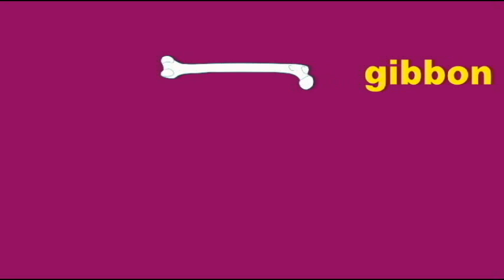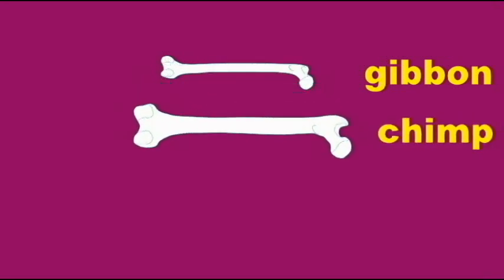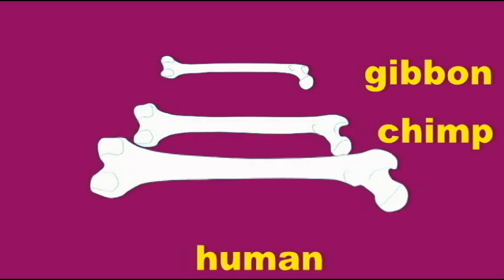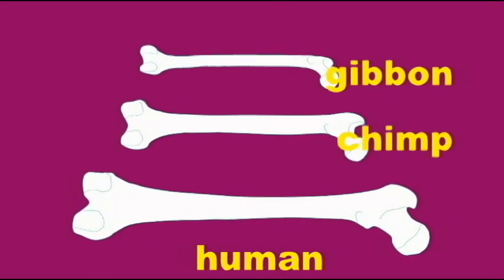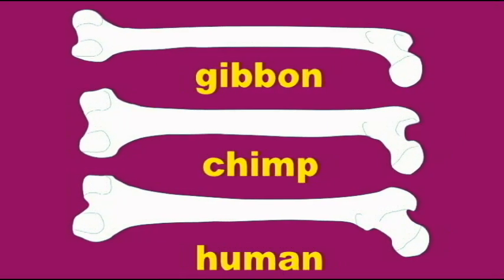In this animation, you can see the difference between the femur bones, the thigh bones, of a gibbon, a chimp, and a human. Humans are bipedal. The other two are not. How different are their thigh bones?